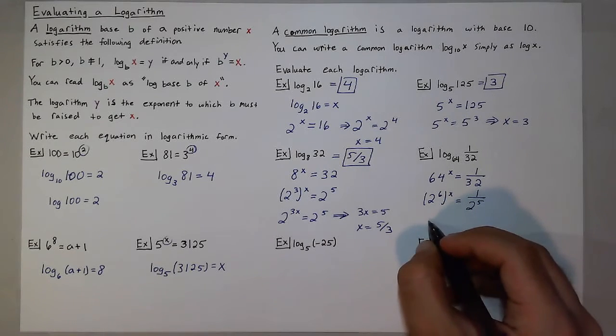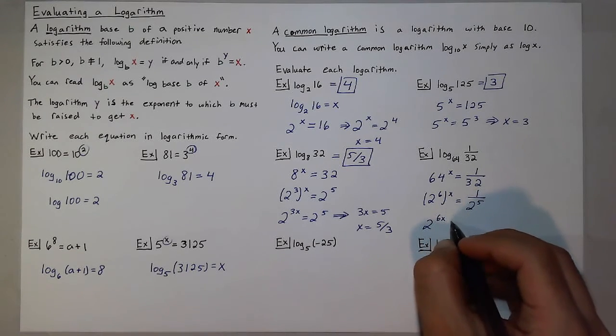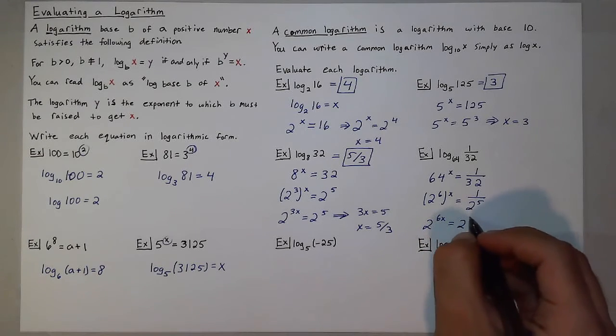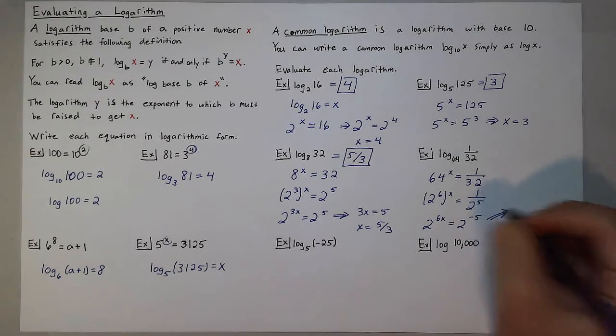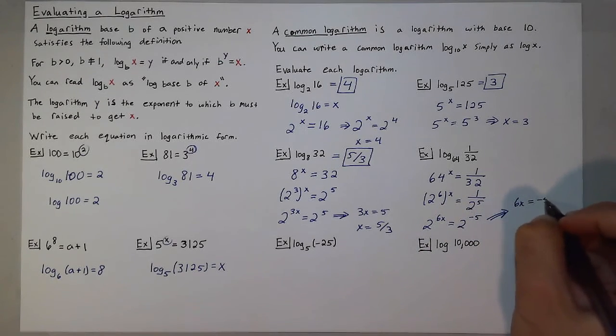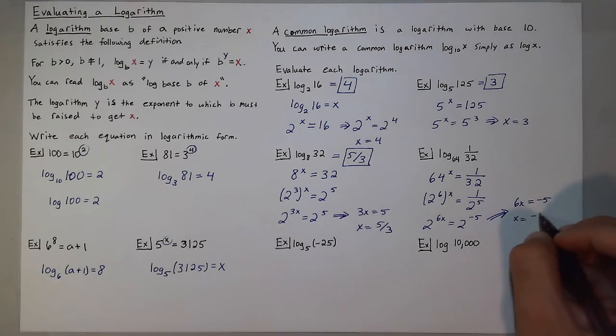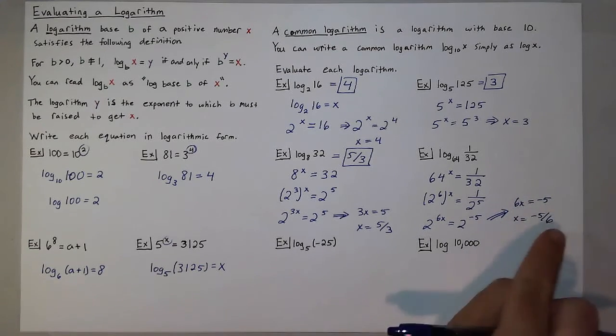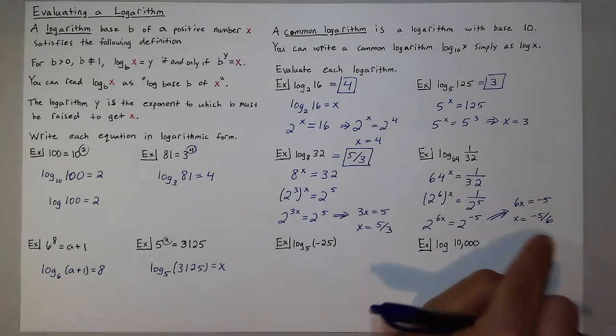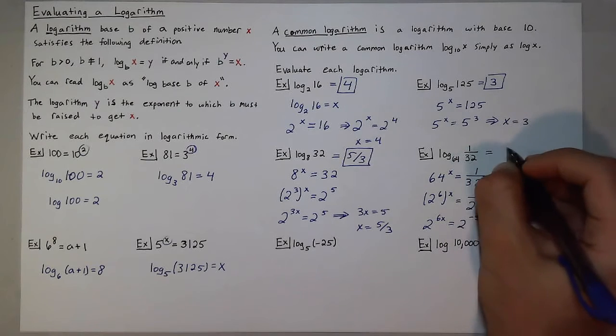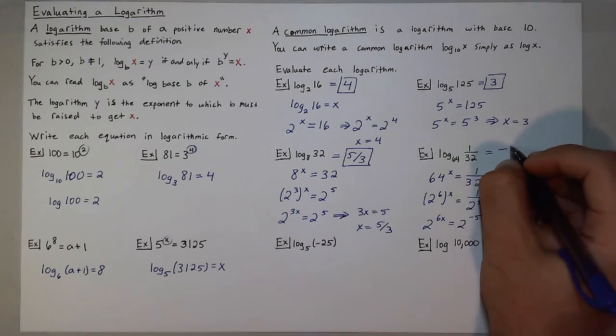So this statement is 2 to the 6x is equal to 2, bring that to the numerator, to the negative 5th. So that tells me that 6x is equal to negative 5, and x is equal to negative 5 sixths. So the power you raise 64 to to get 1 over 32 is negative 5 sixths. So this log base 64 of 1 over 32 is equal to negative 5 sixths.